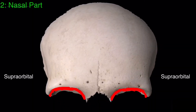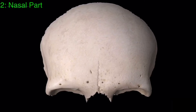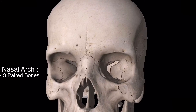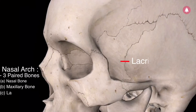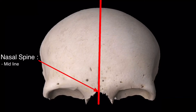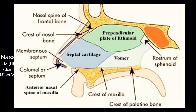Between the two supraorbital margins is present the nasal part of the frontal bone. The nasal part below forms an arch called the nasal arch, which is attached to three paired bones — from medial to lateral: the nasal bone, the maxillary bone, and the lacrimal bone. The prominent feature of the nasal part is the nasal spine, present in the midline; posteriorly it joins with the perpendicular plate of the ethmoid bone.